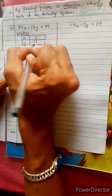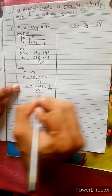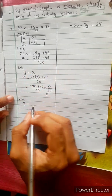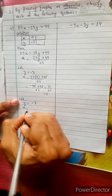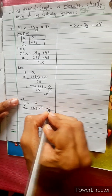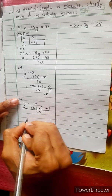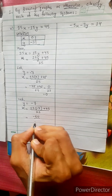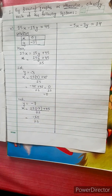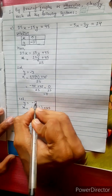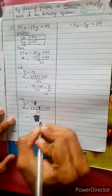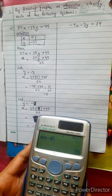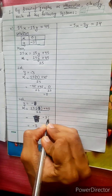When y equals minus 7, x equals 15 times minus 7 plus 45, divided by 25. That is minus 105 plus 45, which is minus 60 divided by 25, giving x equals minus 3. When y equals minus 8, x equals 15 times minus 8 minus 45, which is minus 75 divided by 25.